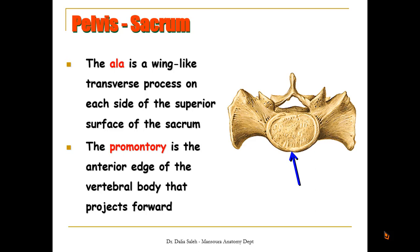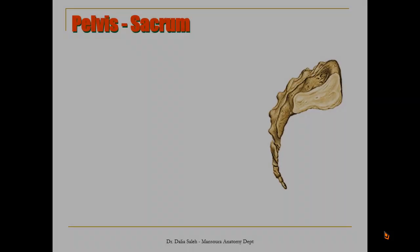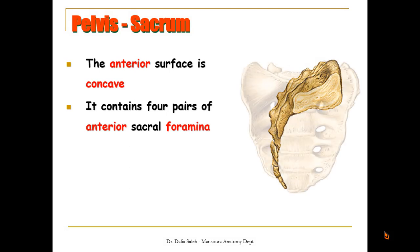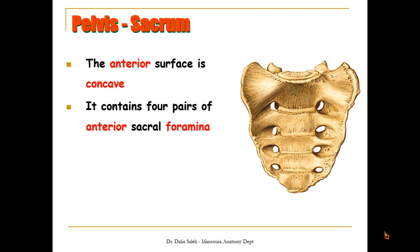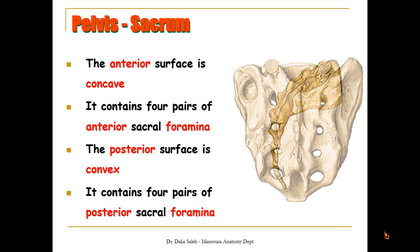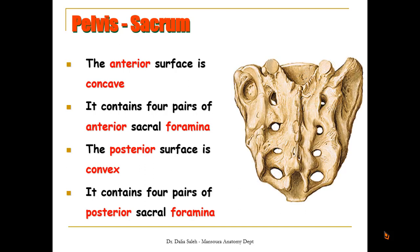Also, we can see the promontory, which is an anterior edge of the vertebral body that projects forward. The anterior surface is concave and contains four pairs of anterior sacral foramina, while the posterior surface of the sacrum is convex and also contains four pairs of posterior sacral foramina.